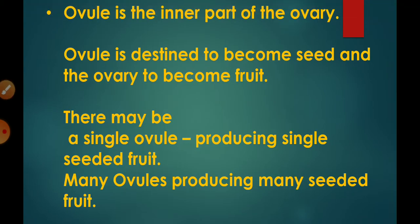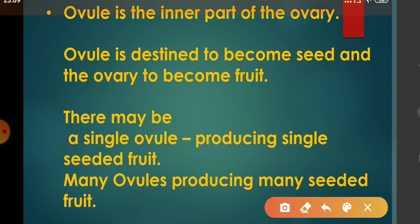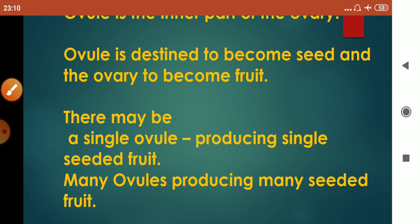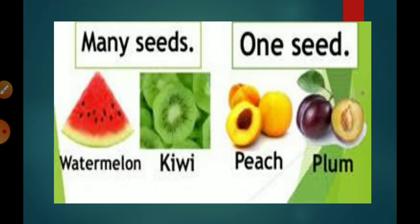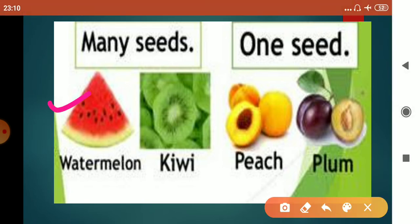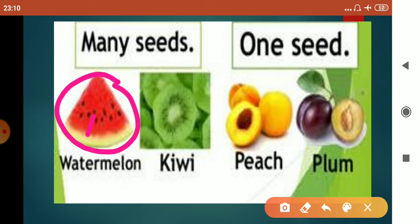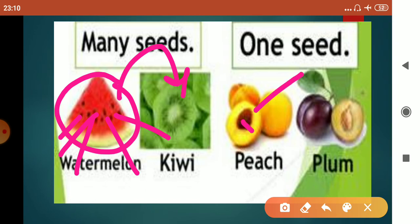The ovule is the inner part of the ovary. The ovule is destined to become the seed and the ovary to become the fruit. After fertilization, the ovule becomes the seed and the ovary becomes the fruit. There may be a single ovule producing a single-seeded fruit, or many ovules producing a many-seeded fruit. For example, watermelon and kiwi are many-seeded fruits, whereas peach, plum, and mango are single-seeded fruits, meaning only one ovule is present inside the ovary.